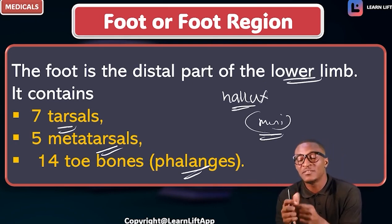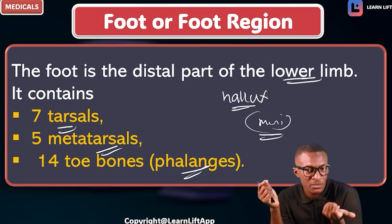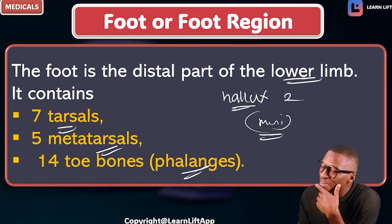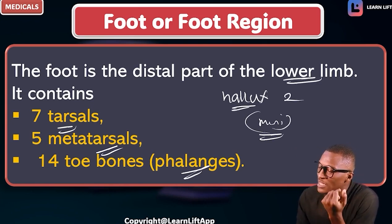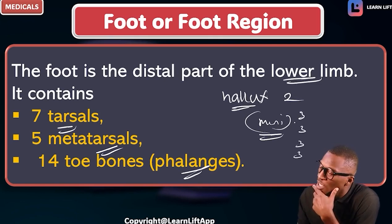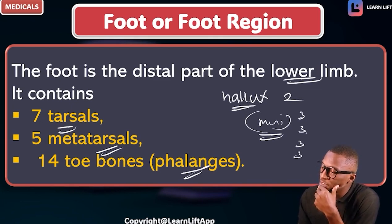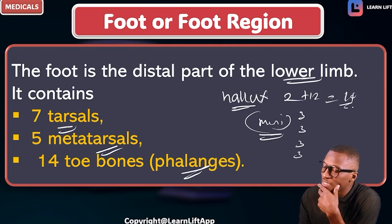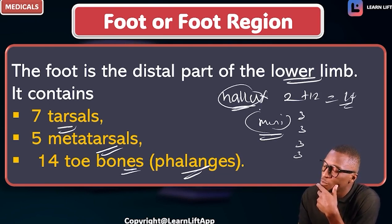The hallux has two bones, not three. Looking at the diagram: the big toe has just two phalanges, but this one has three, this one three, this one three, and this one three. So the count is 12 plus two equals 14 phalanges. The hallux is not having three bones — it has two.